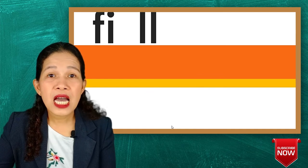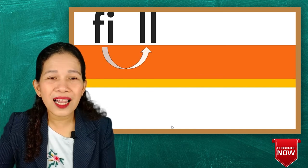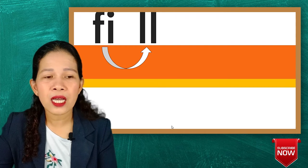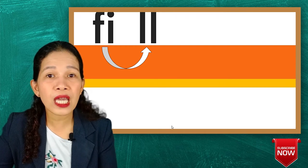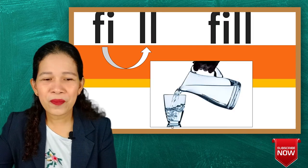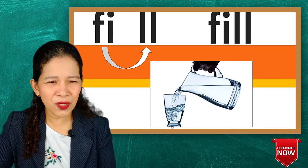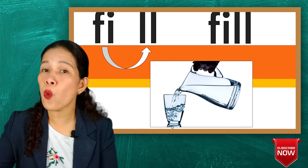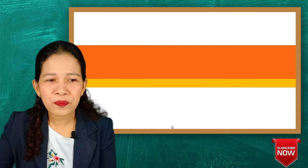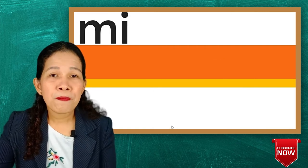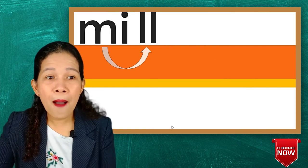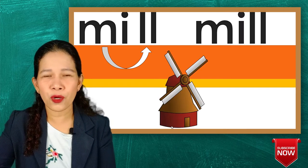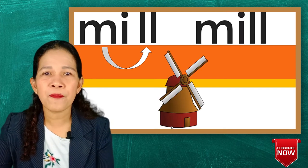Next, fi-ll. We now have double-L at the end, so that's fill. What is that one doing? Filling the glass with water — that's fill. Next: mi-ll, mill. This is a mill. Look at that — a windmill.